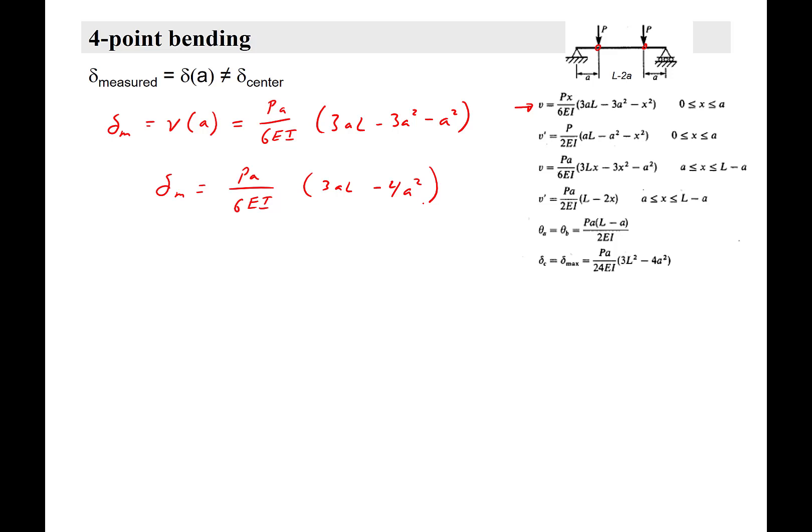Note that often this is different because del measured is not equal to del C. So this is the equation you would get relating the measured displacement, the modulus E, the moment of inertia I, A the location of the anvil, and L the supporting load span. In this case, this distance is L, so L equals the support span, and A is the distance from the pivot to the loading location.